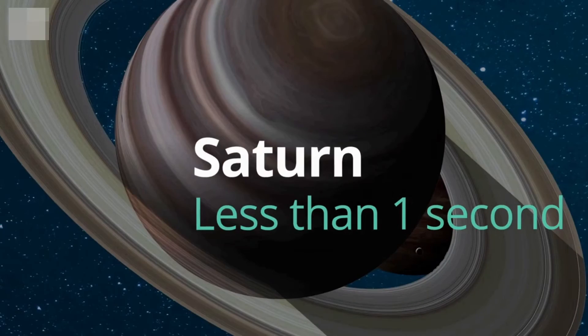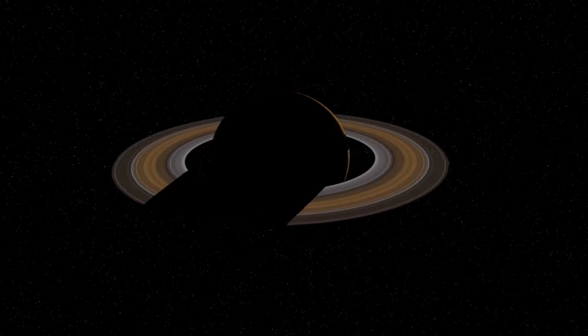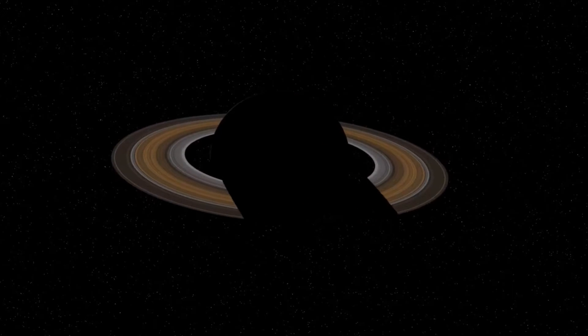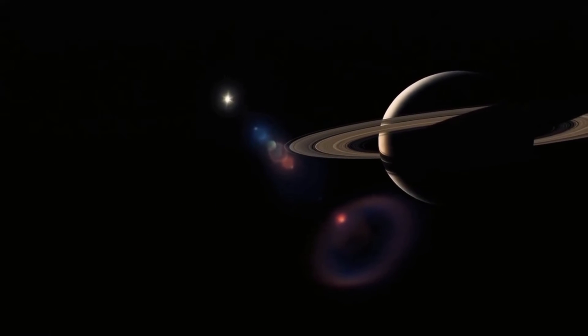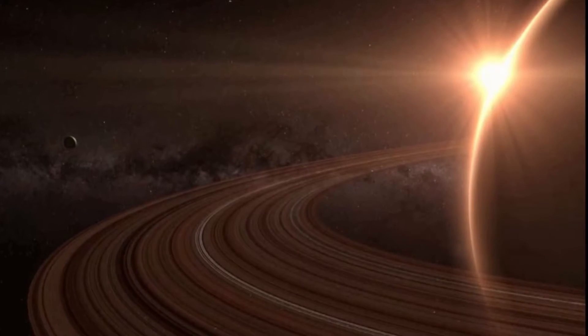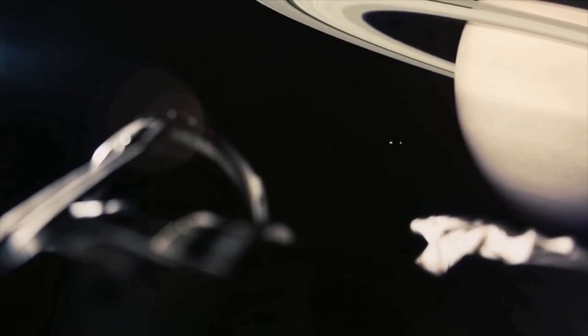Saturn: less than one second. Saturn is the sixth planet from the Sun and the second largest in the solar system after Jupiter. It is a gas giant with an average radius about nine times that of Earth. As with Jupiter, you would descend into this gas giant and die in just less than a second.